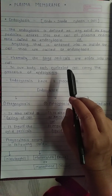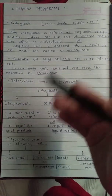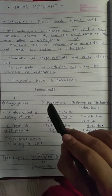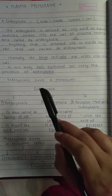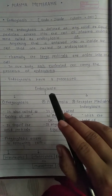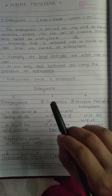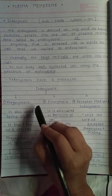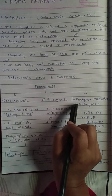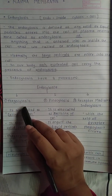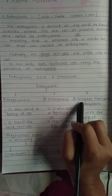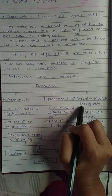Normally, large particles are entered into the cell. In our body, each nucleated cell carries out the process of endocytosis. The process of endocytosis contains three types: phagocytosis, pinocytosis, and receptor-mediated endocytosis.